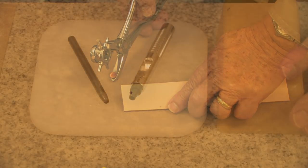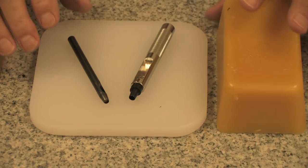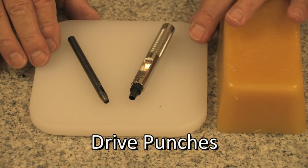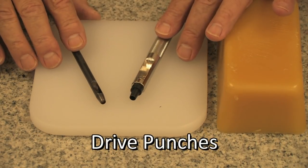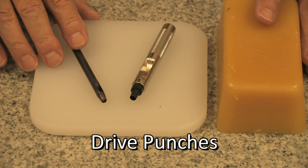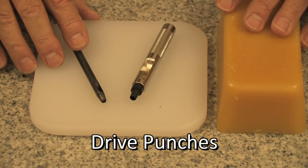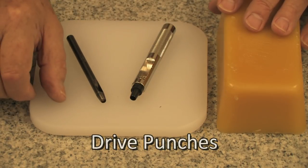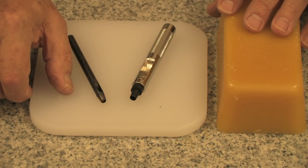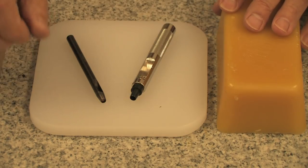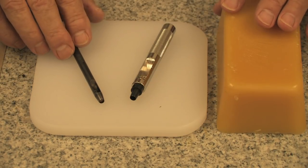I have here on the table the basic equipment we need for punching with drive punches. The only problem with a rotary punch is it is somewhat limited as to where it could punch. It can only go in about an inch or an inch and a quarter from the edge of the leather, whereas a drive punch you can punch anywhere on the leather.